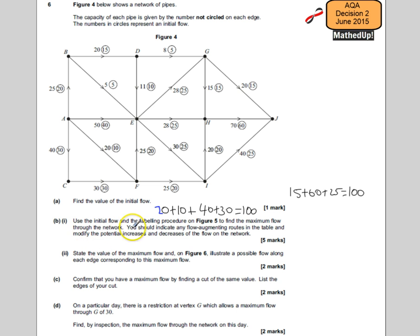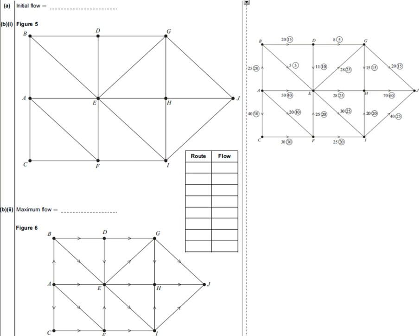Part B says use the initial flow and the labeling procedure on Figure 5 to find the maximum flow through the network. You should indicate any flow augmenting routes in the table and modify the potential increases and decreases on the flow on the network. So I'll move on to where Figure 5 is.